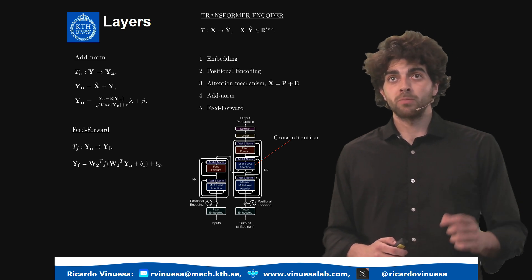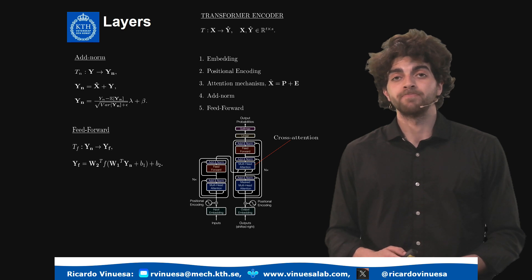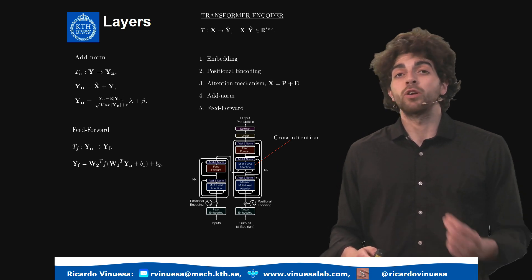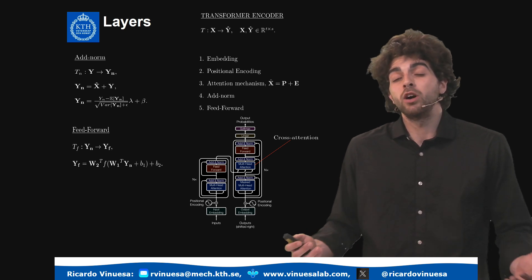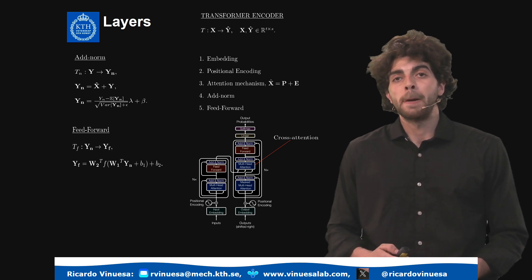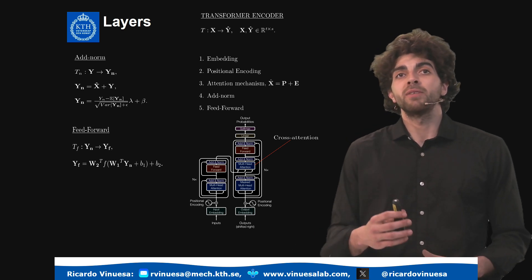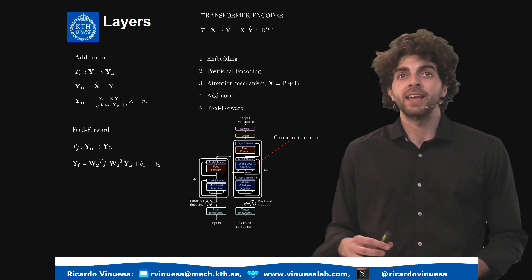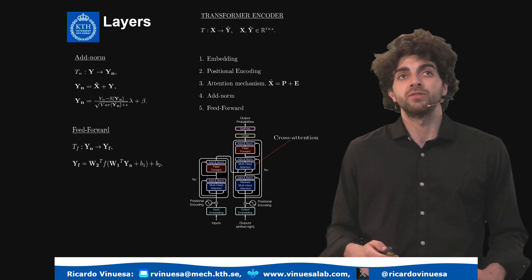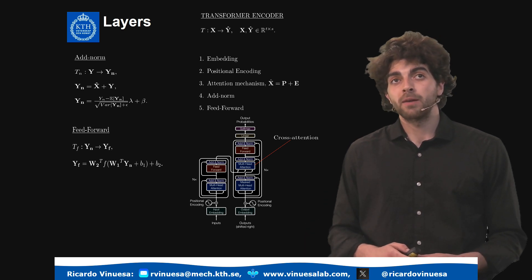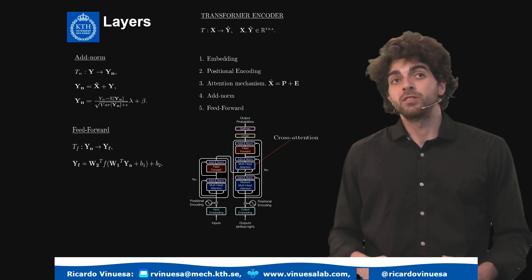Continuing with our layers, the add-norm and the feed-forward layers are the final layers that we leverage in these architectures. The add-norm is a residual connection which is fundamental to retrieve information that may have been lost through the attention and even more after the feed-forward. This add-norm residual connection layer adds up the information that was input into the attention mechanism to the output of the attention, for a later normalization of this data. It also allows for learning parameters such as beta, lambda, and epsilon, facilitating learning through the training stage.